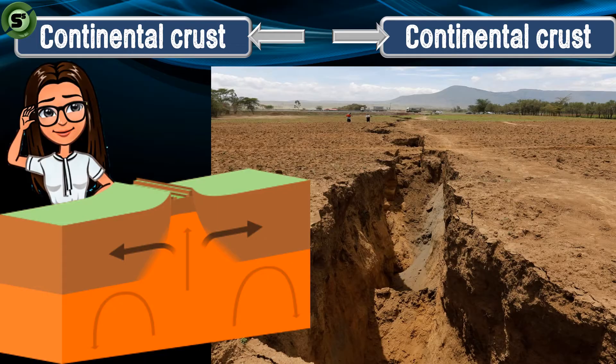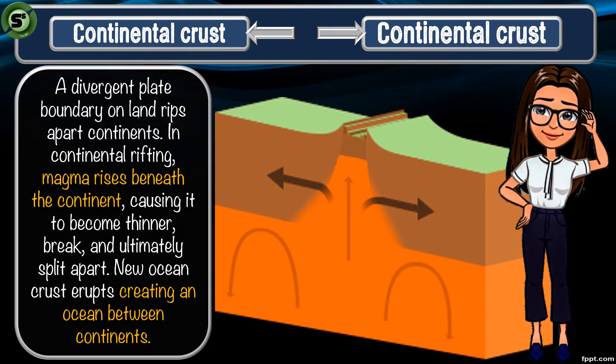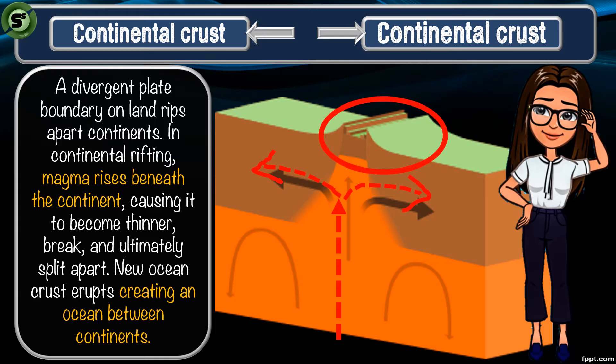A divergent plate boundary on land rips apart continents. In continental rifting, magma rises beneath the continent, causing the continental crust to become thinner and thinner. As this event continues, the continental crust breaks and ultimately splits apart. The new ocean crust erupts, creating an ocean between the splitting continents.